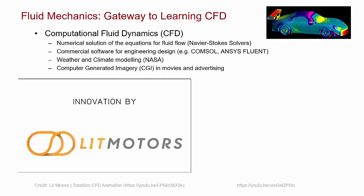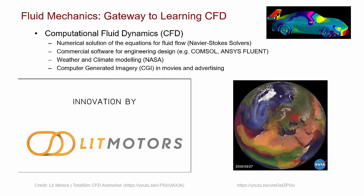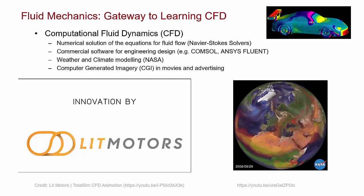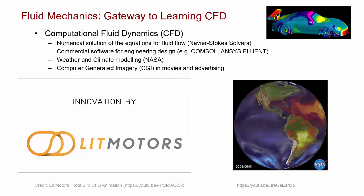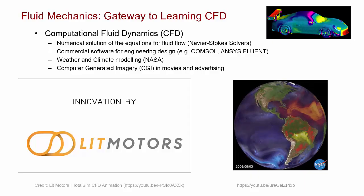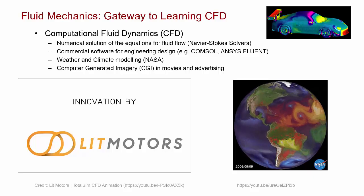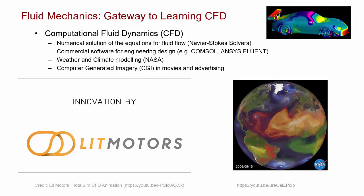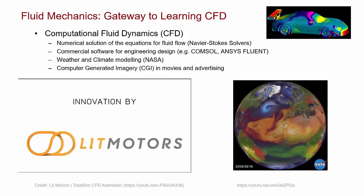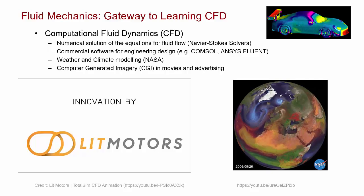CFD goes quite a bit beyond mechanical design. Nowadays, your daily weather prediction is really made using computational fluid dynamics — here we're solving the complex flows in the atmosphere. It's also been used extensively for climate modeling by NASA. This image shows what's called the global circulation of the atmosphere, a prediction by NASA as part of their efforts to predict the effects of climate change.